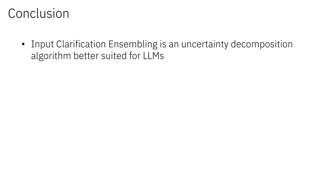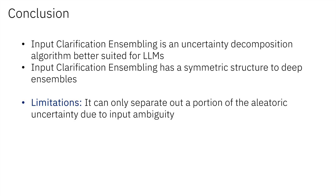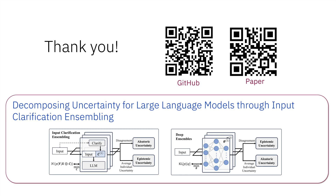To sum up, input clarification ensembling is an uncertainty decomposition algorithm better suited for LLMs, with a symmetric structure to deep ensembles. However, one limitation of this approach is that it can only deal with aleatoric uncertainty due to input ambiguity, and therefore tends to underestimate the aleatoric uncertainty. How to incorporate other sources of aleatoric uncertainty would be a future direction. With that, I will close the talk today.